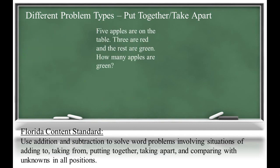In the next problem, five apples are on the table. Three are red and the rest are green. How many apples are green? Here we know the total is five and part of those apples are red. We can determine the other part by finding the difference. Five minus three is equal to two green apples.